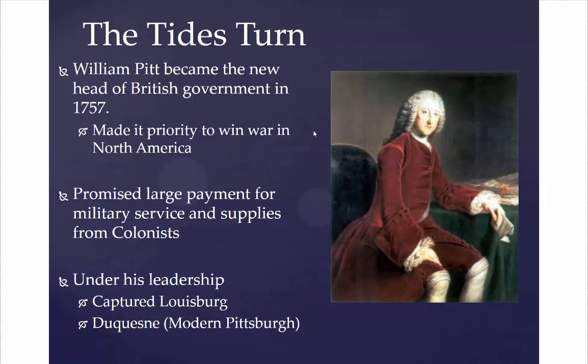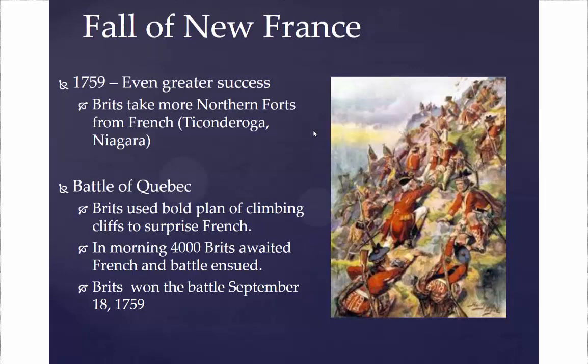By 1759, the British had even more success, taking forts at Ticonderoga and Niagara from the French. Then came the Battle of Quebec, where the British surprised the French by climbing up a cliff and getting the upper hand on the roughly 4,000 French waiting there. The British won the battle, and this was essentially the end of New France's territory and control in the New World.